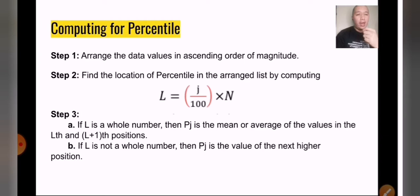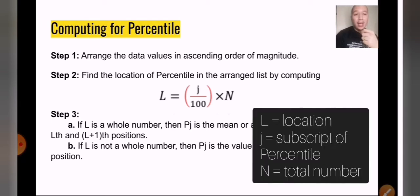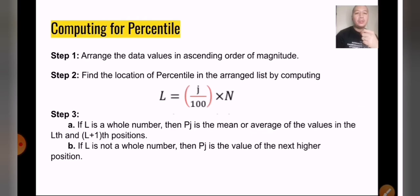Next, or step number two, you will have to find the location of percentile in the range list by computing L. We used L because L pertains to location. It equals the letter j, P for percentile j over 100, multiplied by the total number. Later on, I'll show you an example in order for you to better understand this.